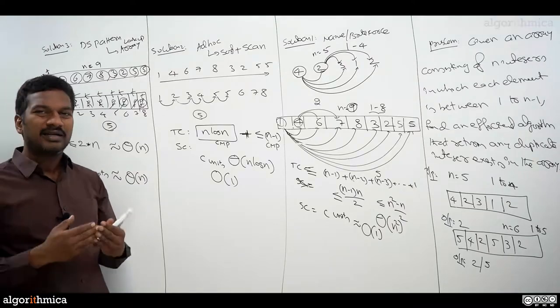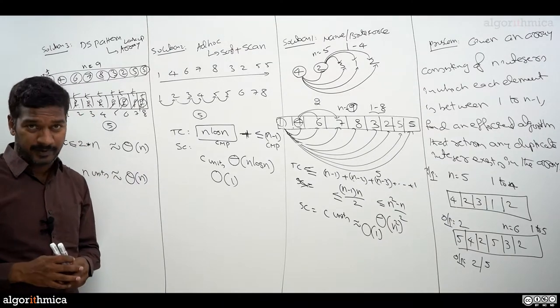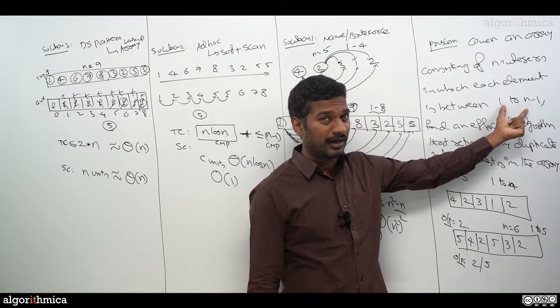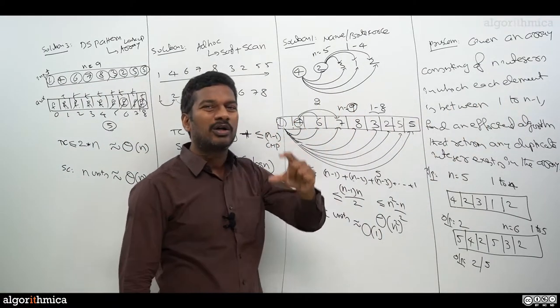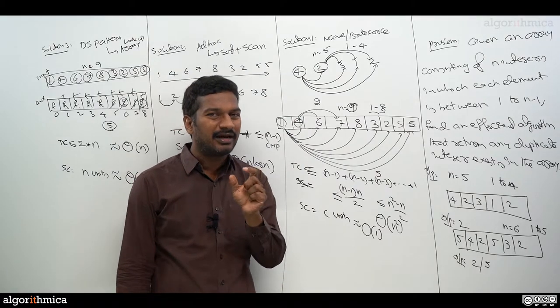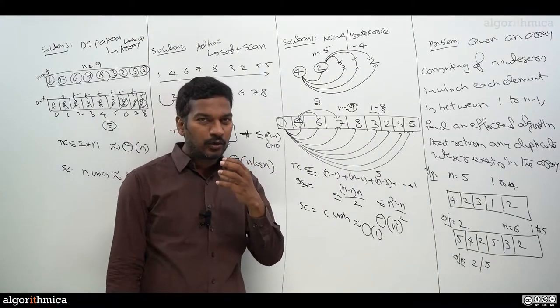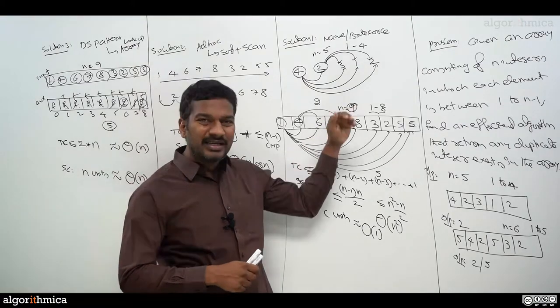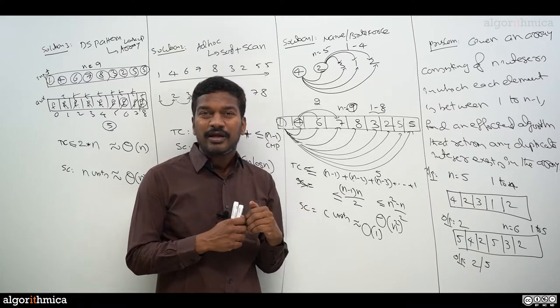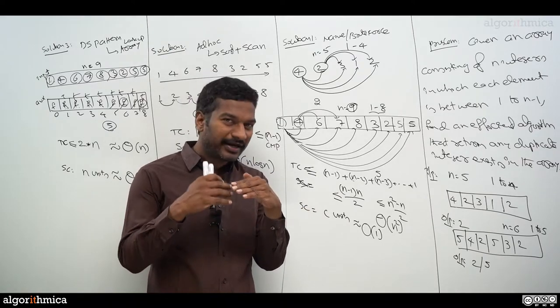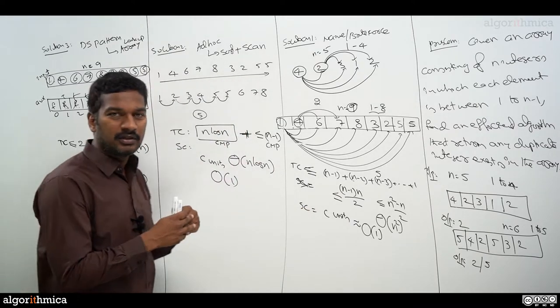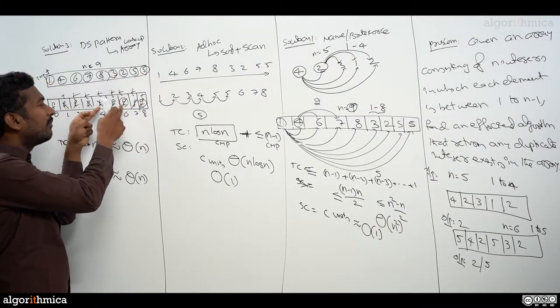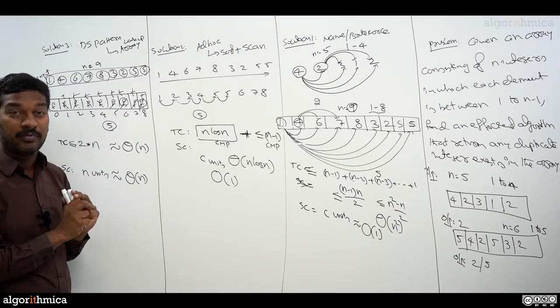First time we may think that it cannot be possible to reduce this space. But if you look at the problem statement, there's one more hint. If you observe, the range is 1 to n minus 1. That means they're giving some kind of hint for us to come up with an elegant way to remove this space. Since the range is 1 to n minus 1, can we really use in-place memory? That means, instead of going for external memory, can I really use the same array here to remember this true and false flag kind of behavior?